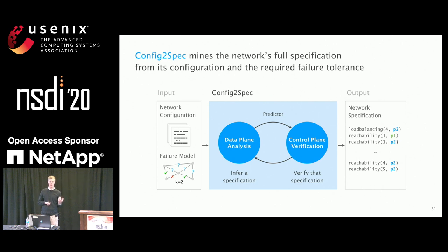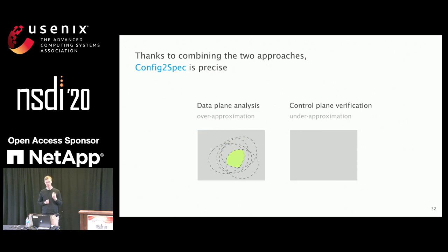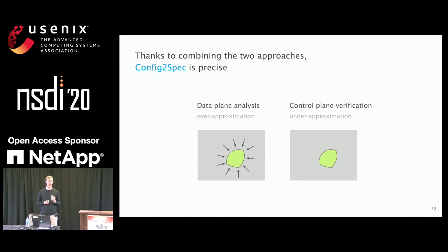We use a data plane analysis tool and a verifier, and we have a predictor which always decides whether to use data plane analysis or control plane verification based on what promises faster progress. Thanks to this combination, config-to-spec is precise. We have an over-approximation that includes all policies and refines it step by step, while the under-approximation from verification ensures we don't include any policy which should not be part of the specification.